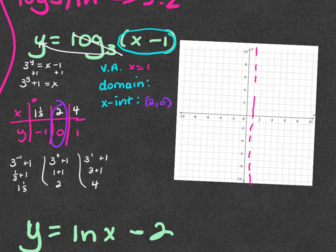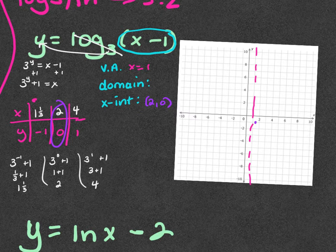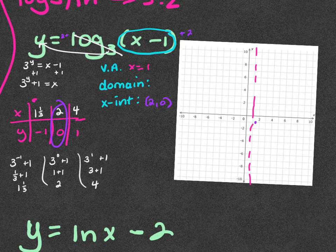If there's a number in front of the log — added or subtracted — those would move first, then you'd pick up the y. You only leave it when it's in parentheses.